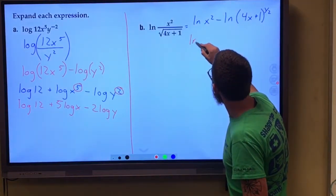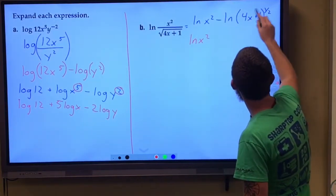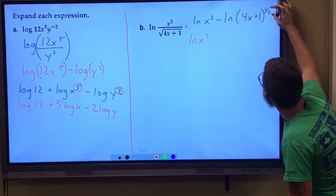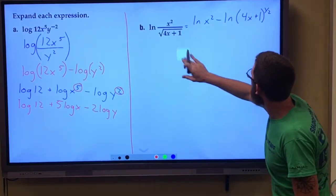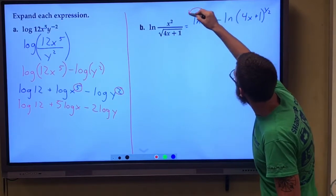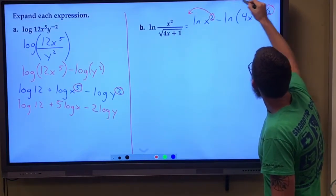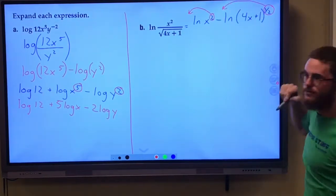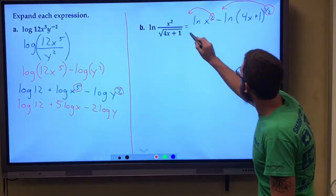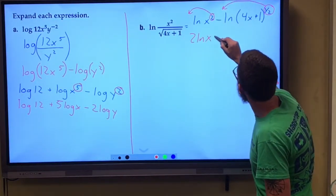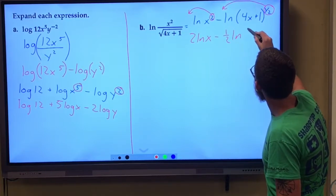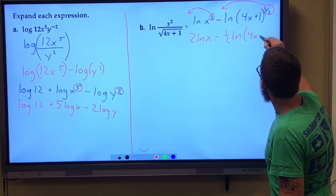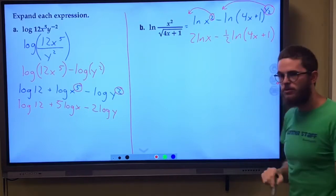So I've got this natural log of x squared over here. I'm going to use the power rule. I'm just going to go ahead and power rule twice here. Bring that square there. Bring that power of 1 half over here. So this is 2 natural log of x minus 1 half natural log of 4x plus 1.